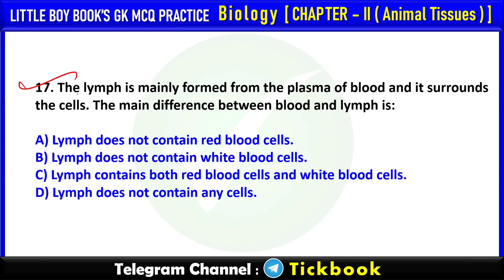Q17. The lymph is mainly formed from the plasma of blood and it surrounds the cell. The main difference between blood and lymph is? Option number A: Lymph does not contain red blood cells.